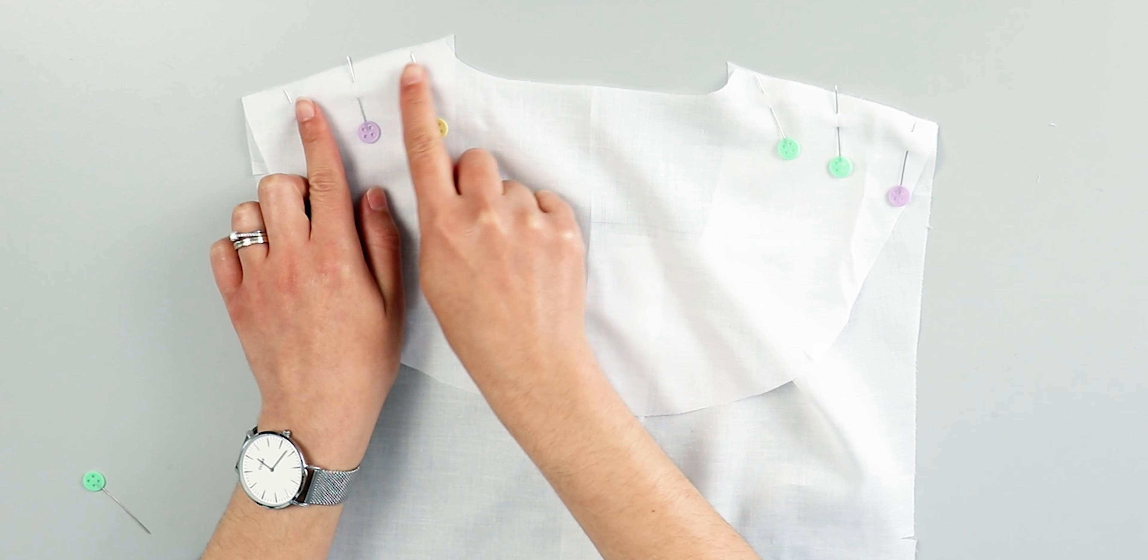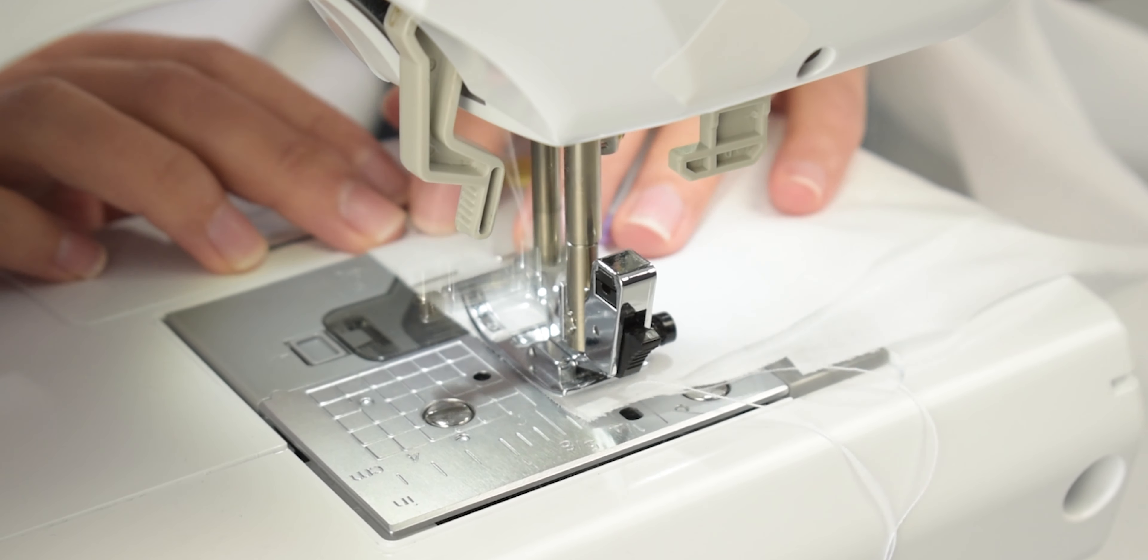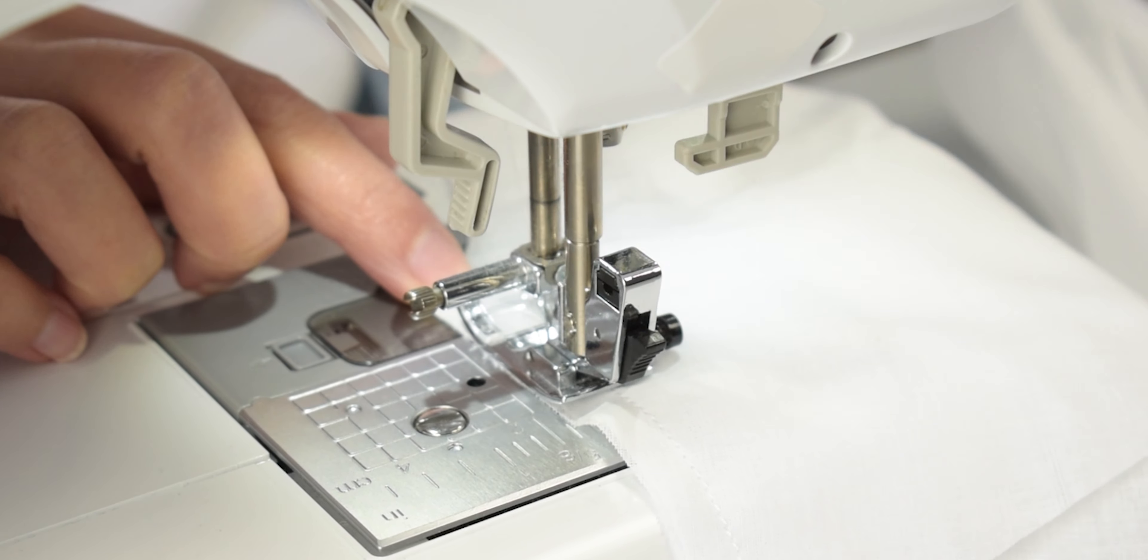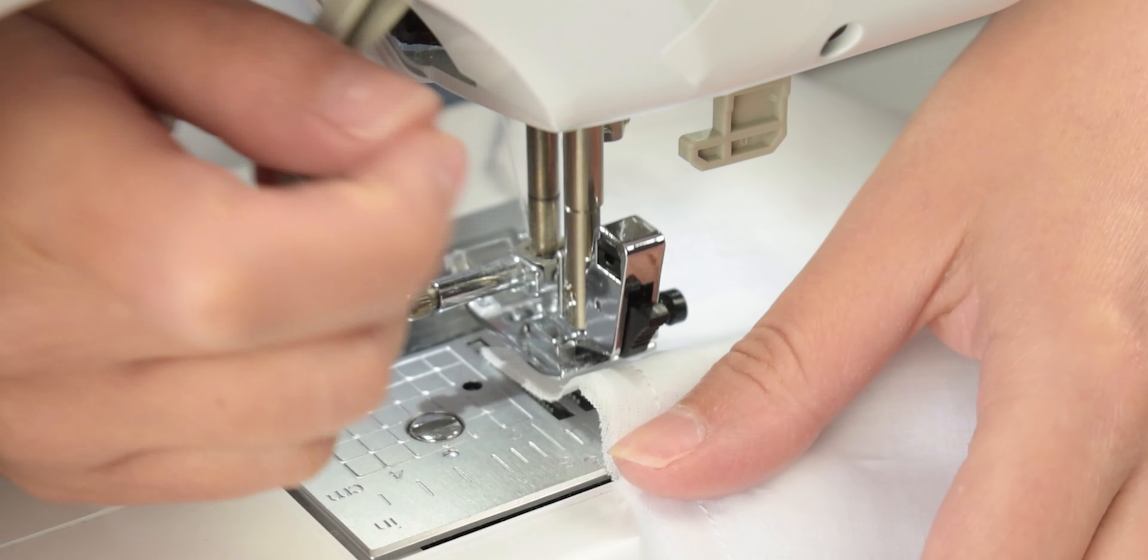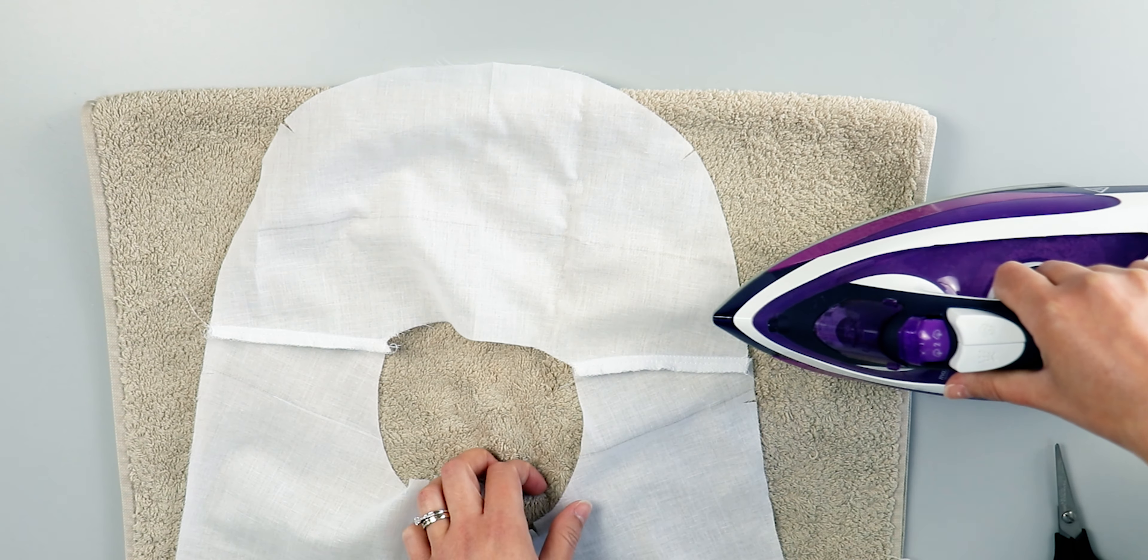Then, sew along the seam allowance of the shoulder seams. Now that's all done, overlock the seams and then iron the seam towards the front panels.